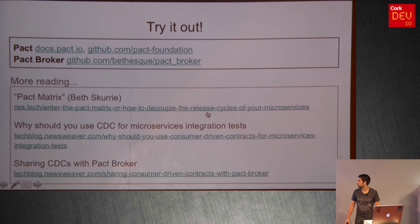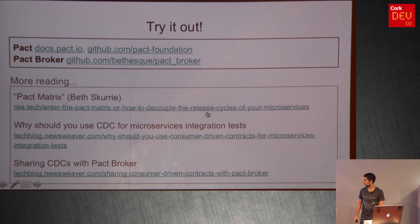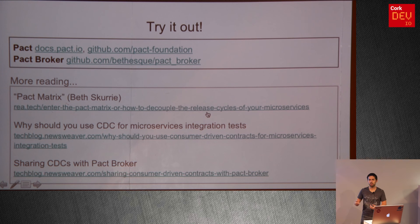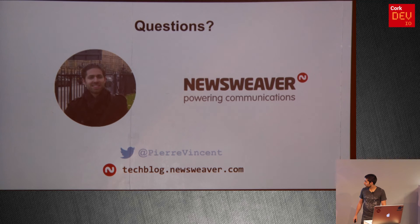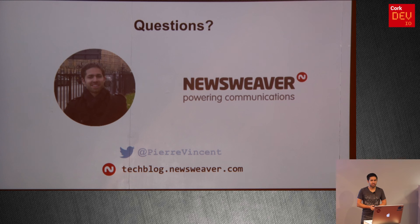That's everything I have for today. Try it out! PACT and PACT Broker are available on GitHub — all free and open source. For more reading, the PACT Matrix is an old but very good blog post that touches on the deployment pipeline piece: how do you test against different environments and make sure the production system will be fine after deploying your service. There are also blog posts on our blog showing how we're using consumer-driven contracts, with examples in Java using the JUnit plugin and how to integrate with PACT Broker. Thanks everybody — hopefully that was clear enough.